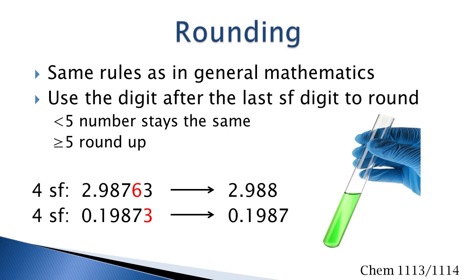Rounding has the same rules as in general mathematics. You use the digit after the last significant digit to round. If it's less than five, leave the number alone; if it's five or more, round up. So if I needed four significant figures in these answers, I'll go to the fifth digit. Since this is greater than five, I'll round up. Here, this one is less than five, and I will leave that alone.